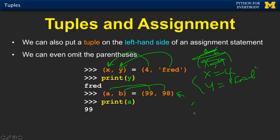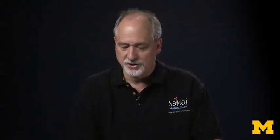Now if you do something like a comma b equals 9, it's going to blow up on that — it's going to be unhappy because it expects if there's a tuple on the left side, there's got to be a tuple on that side. And if you just put 9 over there, there is no tuple on that side.